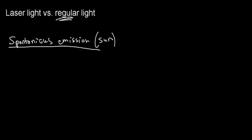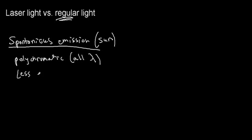When we're talking about spontaneous emission, first of all, we should think about polychromatic light, which means light of all wavelengths. The sun emits all the different wavelengths. Also, the energy is not focused — you can say low energy density, or simply that the energy is not focused.